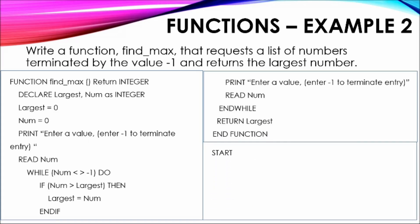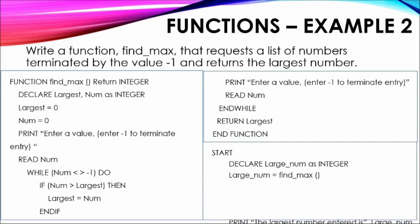The main program shows the declaration of the variable largeNum as integer, which will store the result received from the function. The function call is then launched by specifying the function name. Once the function has been executed and its result returned, an output statement is used to display the largest number using a suitable label. The main program then terminates with the keyword STOP.